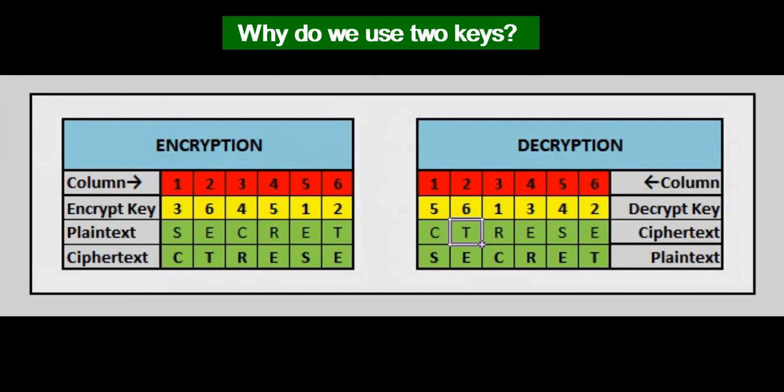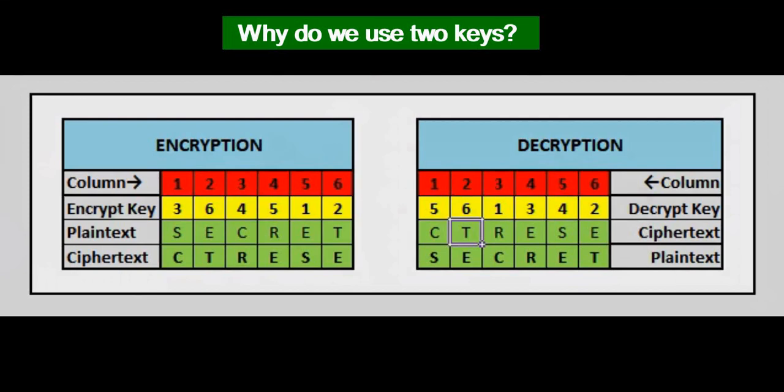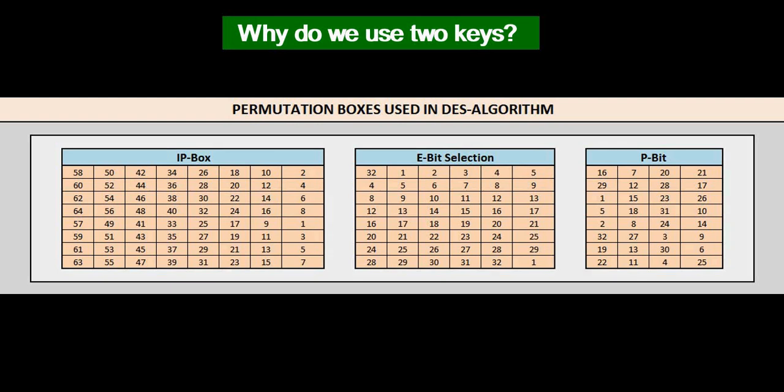The reason for our two different keys is because here we use the order of the key directly for permuting the plaintext. In DES algorithm, as we will see shortly, key doesn't get directly entangled with the plaintext, but is used only for the XOR operations. Permutation, either for key or for plaintext, is managed by using different sets of P-boxes. We will see those things in the next video.